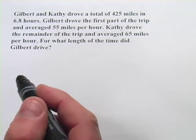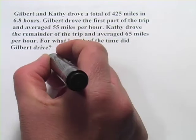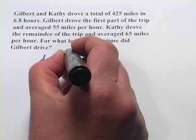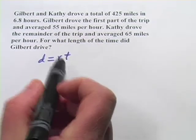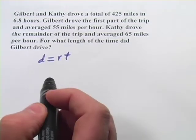Here we have some word problems that involve distance, and the typical formula, sometimes called the DIRT formula, is distance equals rate times time, d equals rt. So that's going to play a part in this. Let's take a look at this first one.